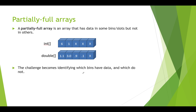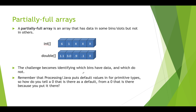The challenge with partially filled arrays is figuring out which bins have real data versus which don't. In Java and Processing that's hard because both put default values in for primitive types. These x's in this int array are actually zeros — the default int value. So how do you tell the difference between a zero you put in the array versus a zero that's there as a default value?